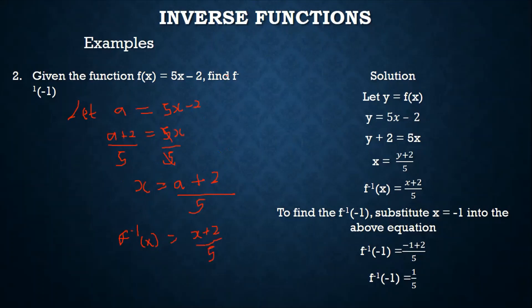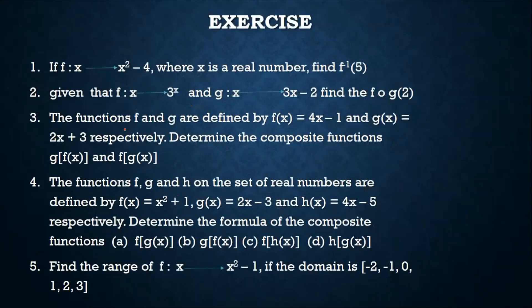The question asked for f⁻¹(−1). Substituting x = −1 into f⁻¹(x) = (x + 2)/5: (−1 + 2)/5 = 1/5. So f⁻¹(−1) = 1/5.